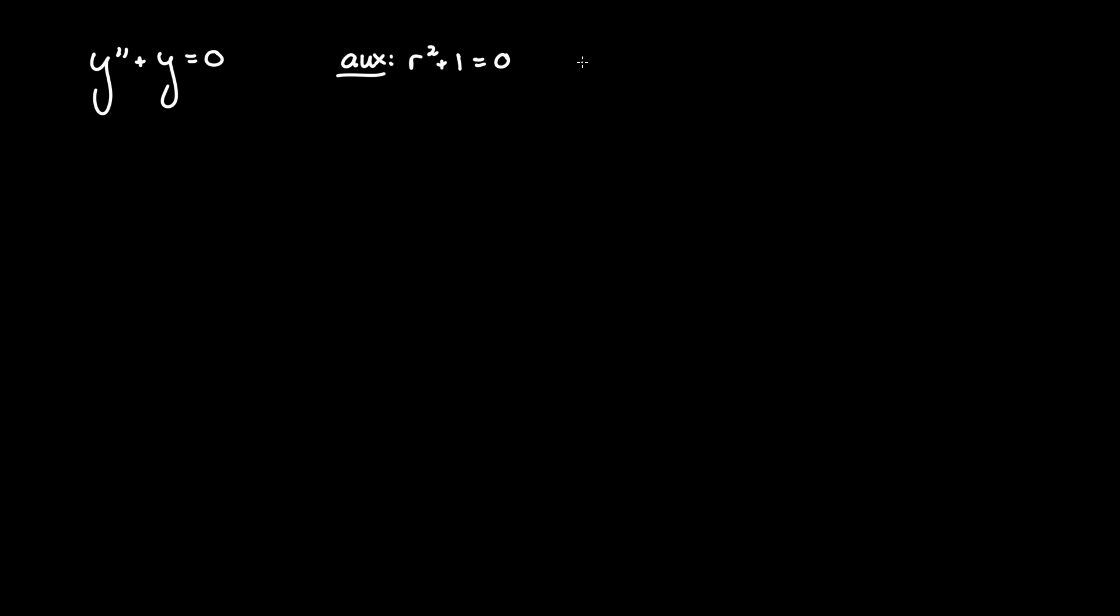So to get the root we have to set r squared equal to negative one, by bringing it to the right hand side. And the only thing we can do at this point is take the square root of both sides. So that leaves us with r equal plus minus square root of negative one. And of course the square root of negative one is i. So r equals plus minus i.